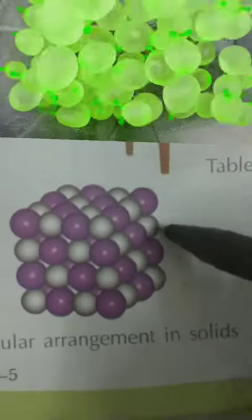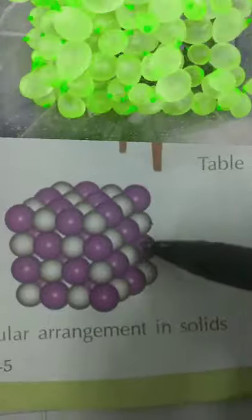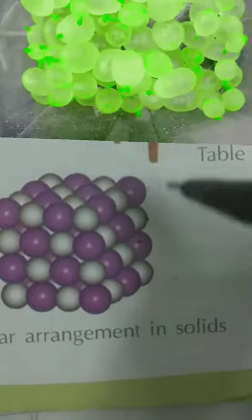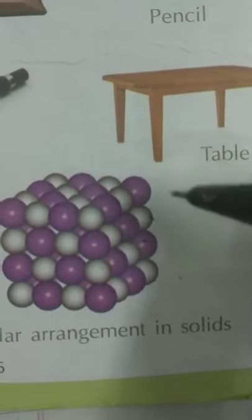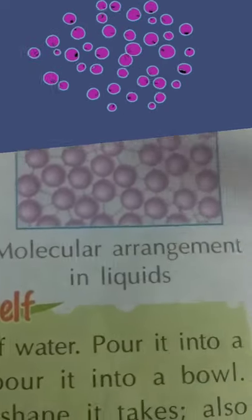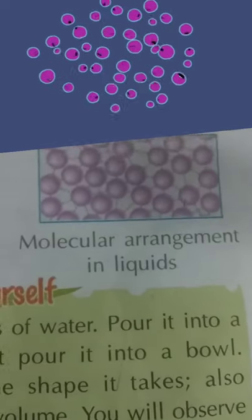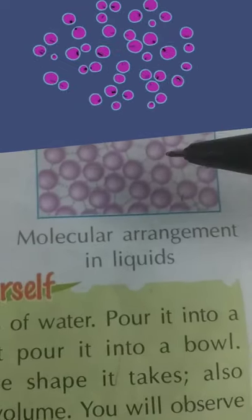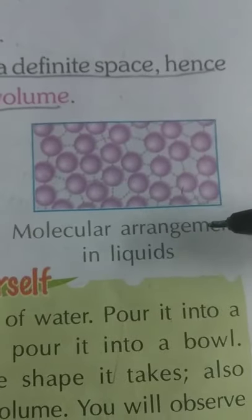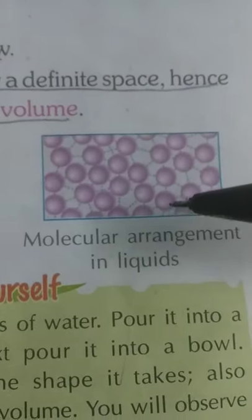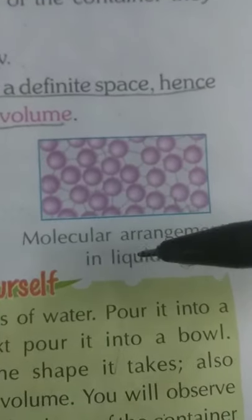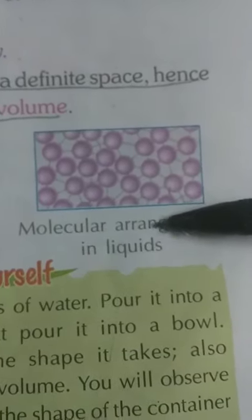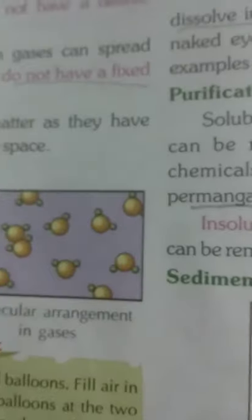Molecules are tightly arranged in solids, so solids have definite shape and definite volume. The intermolecular space is very less and intermolecular force is very high. In the case of liquids, they do not have definite shape — they acquire the shape of the container. They have definite volume and we cannot compress liquids.